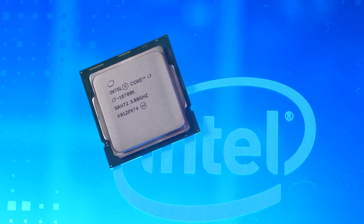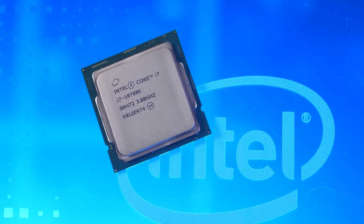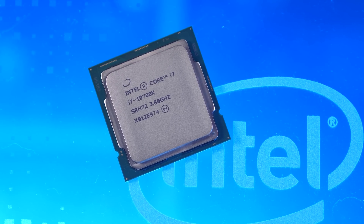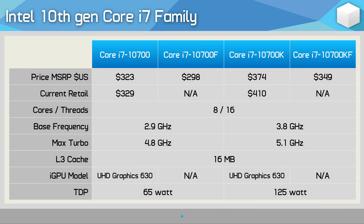The Core i7 range is somewhat simplified. There are two distinct 8-core 16-thread models, each with an F version that drops the iGPU. The Core i7-10700 is the locked part, running at a base clock of 2.9GHz with a max turbo of 4.8GHz, whereas the 10700K is unlocked and runs at at least 3.8GHz base and 5.1GHz boost. Both feature a 16MB L3 cache, while the locked model has a 65W TDP and the unlocked part a 125W TDP.